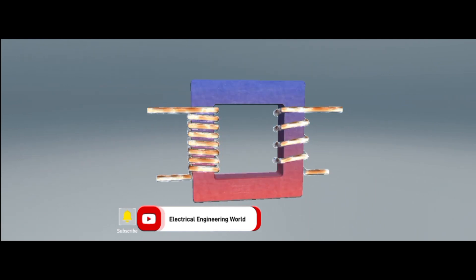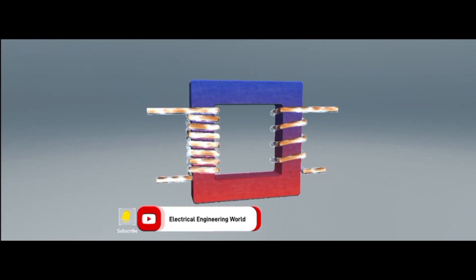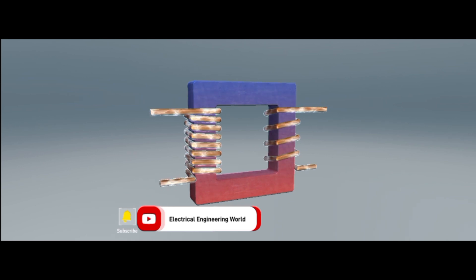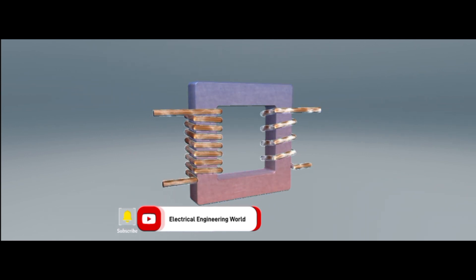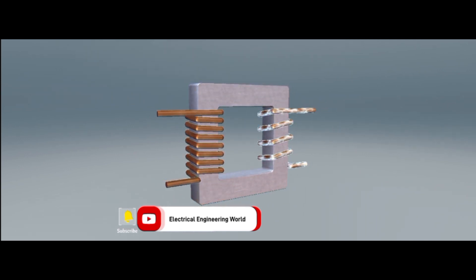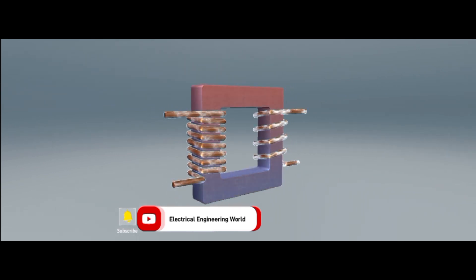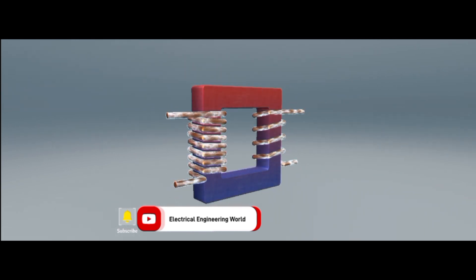The current flowing through the primary coil induces a varying magnetic field in the iron core, which, in turn, induces electric current in the secondary coil.